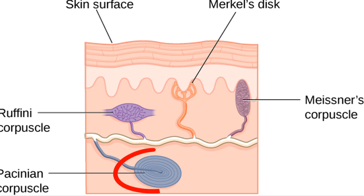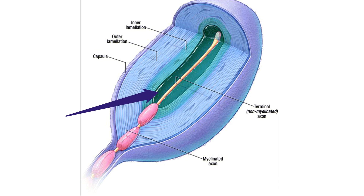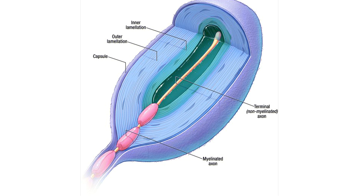Pacinian corpuscles are also known as lamellar corpuscles. They are deeper than Meissner's corpuscles because they detect higher frequency vibrations and gross pressure. They are ovoid in shape but lamellar in structure. A large myelinated nerve fiber enters the corpuscle and loses its myelin sheath, and a naked axon terminates in an expanded end. Unlike Meissner's corpuscles concentrated in the palm, sole, nipples, and external genitalia, Pacinian corpuscles are scattered throughout the body — abundant in dermis, subcutaneous tissue, ligaments, joints, capsules, pleura, peritoneum, nipples, and external genitalia. They are also rapidly adapting, with a frequency range of 20 to 1000 Hz.